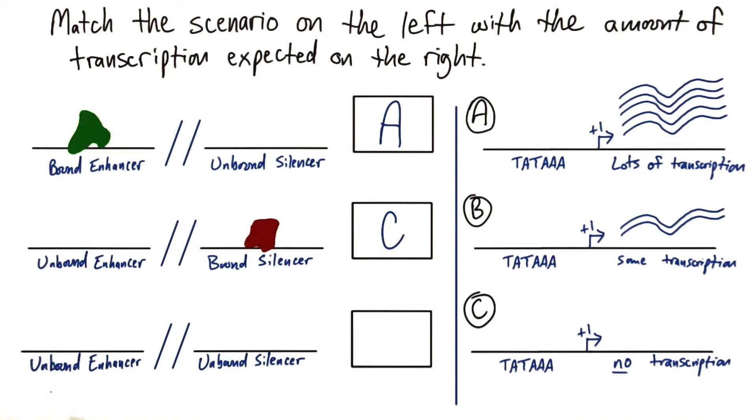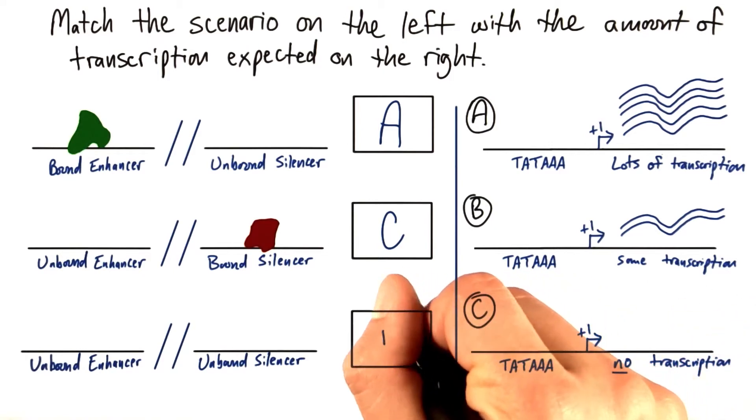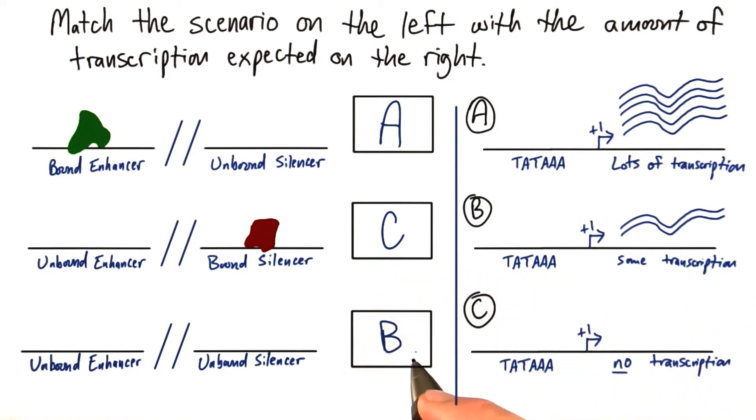And that leaves this last scenario where we don't have a bound enhancer, we don't have a bound silencer. The promoter is left to initiate whatever transcription it can on its own. And so we reach this scenario of some transcription. It depends entirely on the promoter region itself.